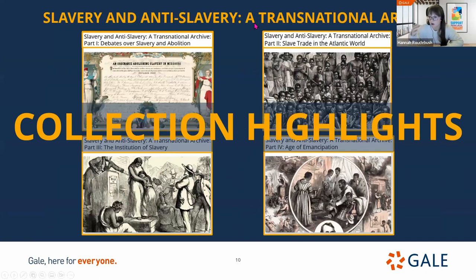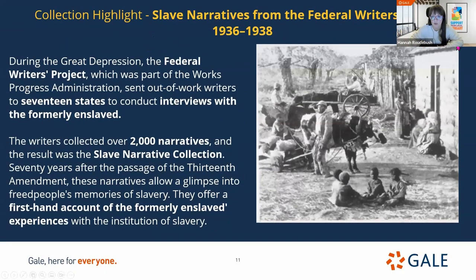All four different parts are comprised of 71 different collections. A few I wanted to highlight for their genealogical relevance: the first, and probably one of my favorites, is Slave Narratives from the Federal Writers Project. In the 1930s, as part of the Works Progress Administration, writers went out into 17 different states to conduct interviews with the formerly enslaved. In this process, they collected over 2,000 different narratives — these are just so moving to read. We're going to look at one from Indiana specifically today.